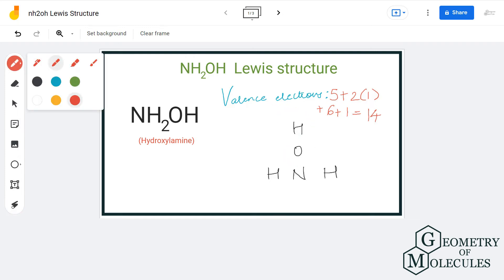So this would be the arrangement, and to now start with the placement of electron pairs, we will first place an electron pair between nitrogen and hydrogen atoms, then between nitrogen and oxygen atoms, and then between oxygen and hydrogen atoms.